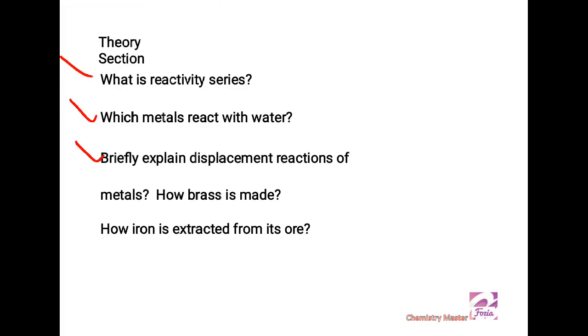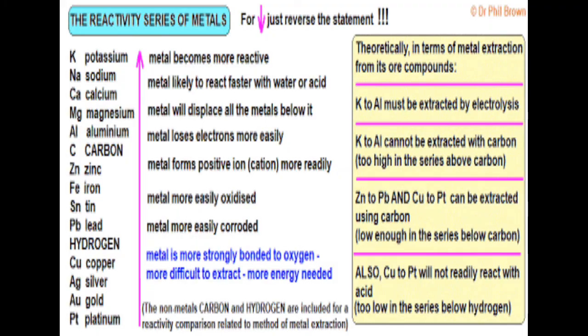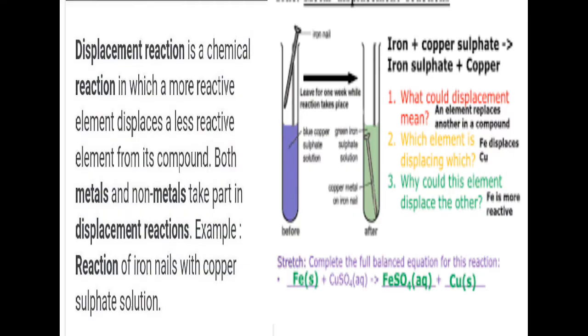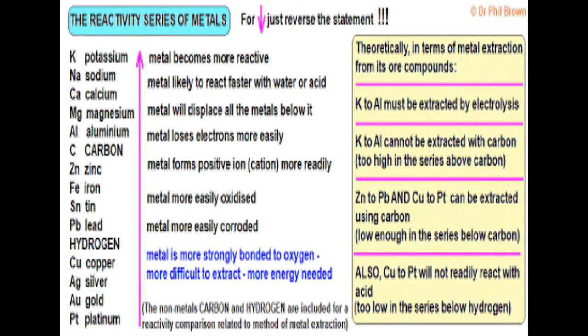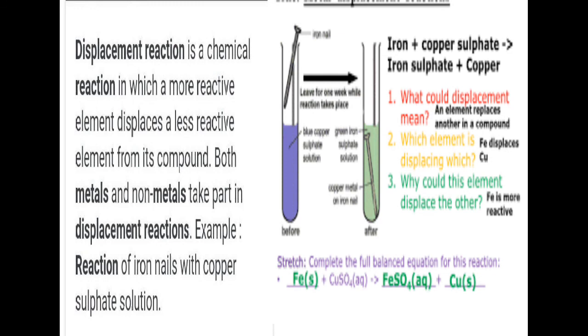The next question is: briefly explain the displacement reactions of metals. First, we have to see what is displacement reaction. It is a chemical change in which a more reactive element displaces a less reactive element from its compound. In the reactivity series of metals, we can see the metals which are reactive can displace the underlying metals from their compound. In this example, an iron nail is reacting with copper sulfate solution.